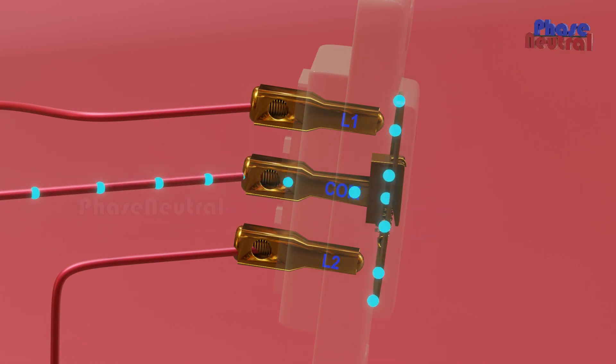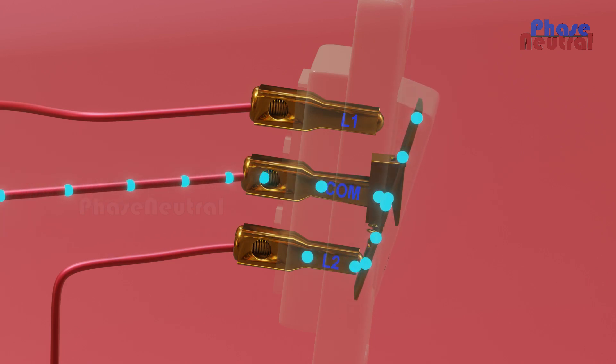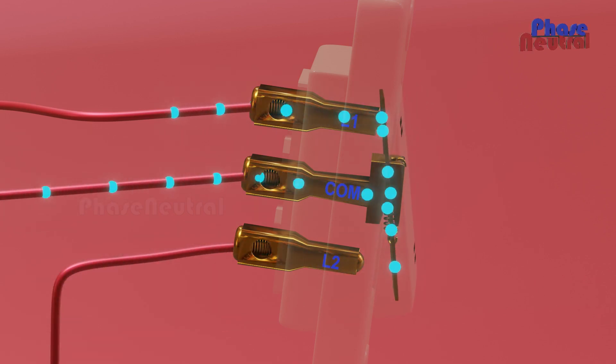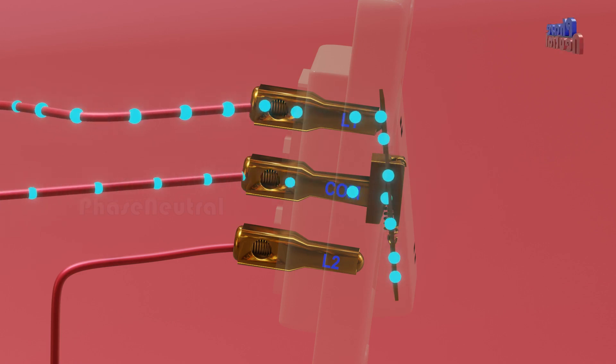So current can flow on both ends of the metal plate. When the switch is in on position, the metal plate touches the L2 terminal and current passes to L2. When the switch is in off position, the metal plate touches the L1 terminal and current passes to L1.